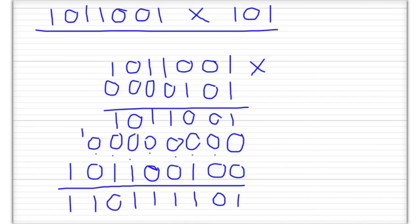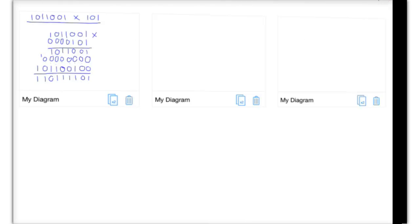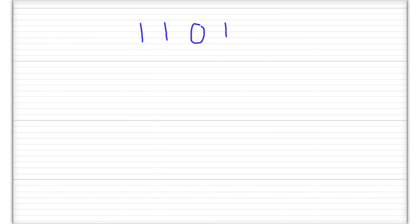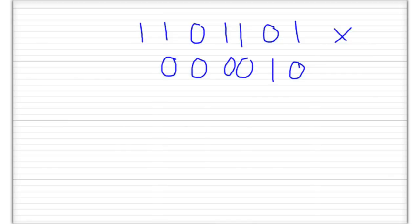Let's move on to another problem — this one might actually be a little bit easier. We're going to do 1, 1, 0, 1, 1, 0, 1 multiplied by just 1, 0 — so just 2 digits. We can put 0s in here just to help us see that that's a 7-bit number.